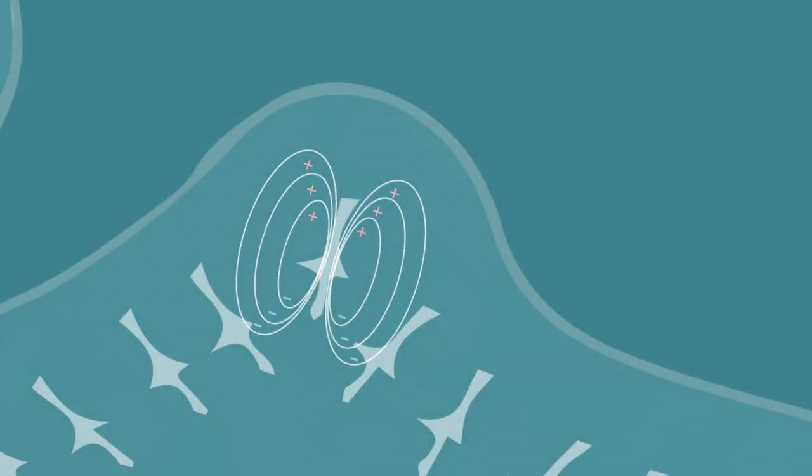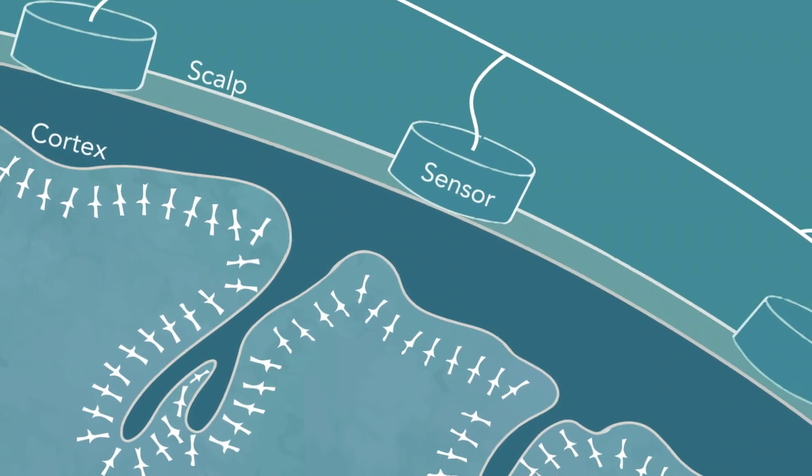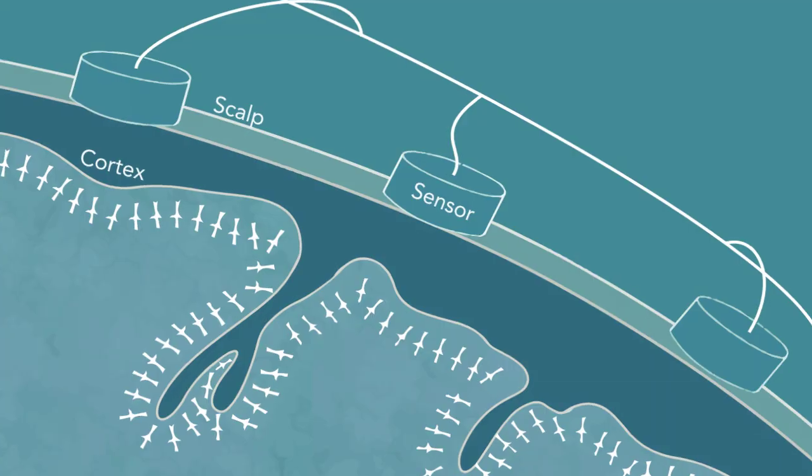A single dipole, generated by the postsynaptic potentials of a single neuron, is generally too weak for an electrode on the scalp to detect. However, the summed synchronous activity of thousands of dipoles will produce a measurable signal.